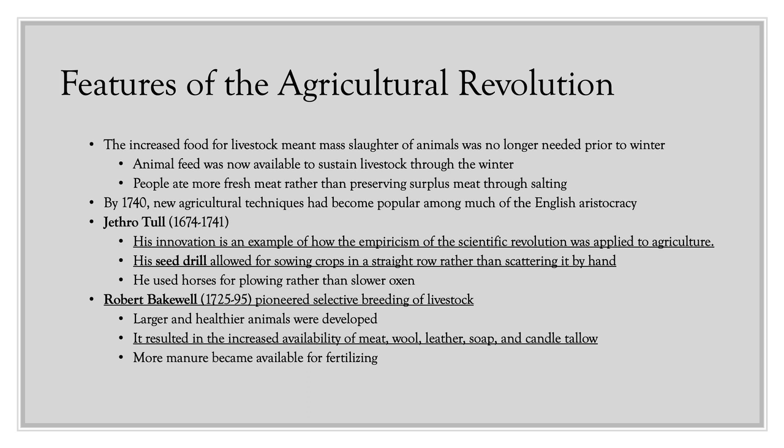Another critical piece of technology was the seed drill invented by Jethro Tull. His innovation is an example of how the empiricism of the scientific revolution was applied to agriculture. The seed drill allowed for sowing crops in a straight row rather than scattering seeds by hand, and horses were used for plowing rather than slower oxen — a faster, more productive way to plant seeds.